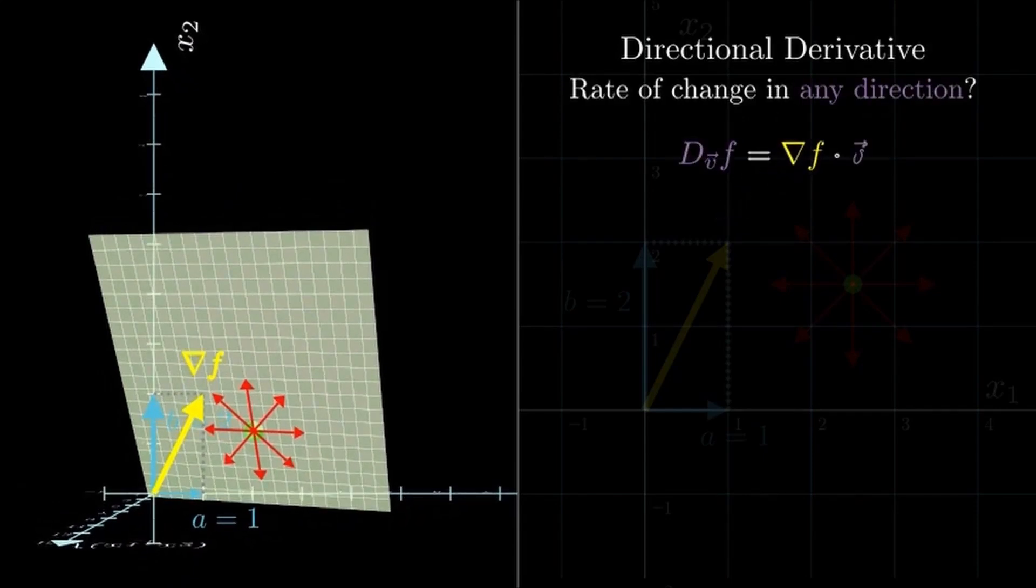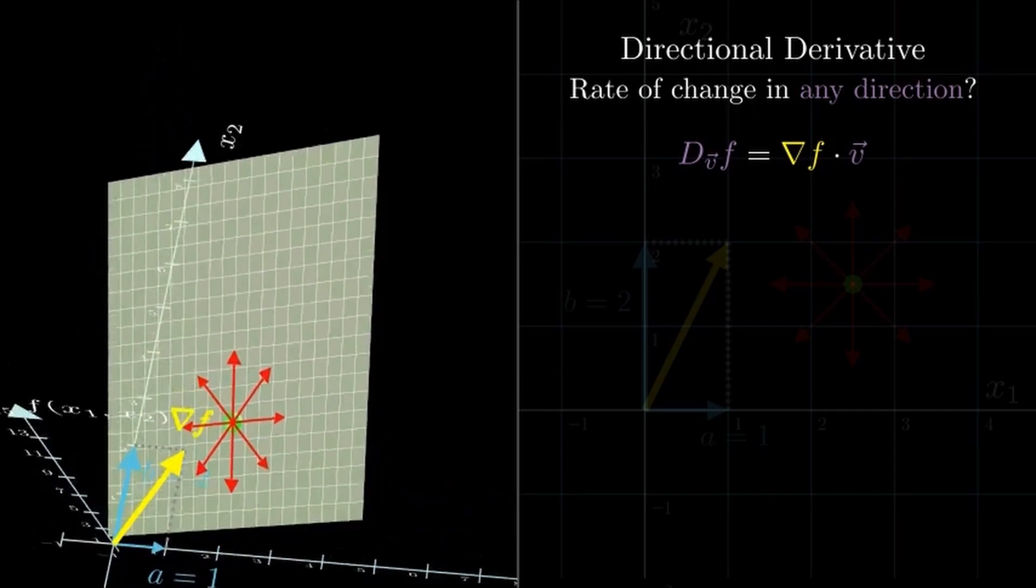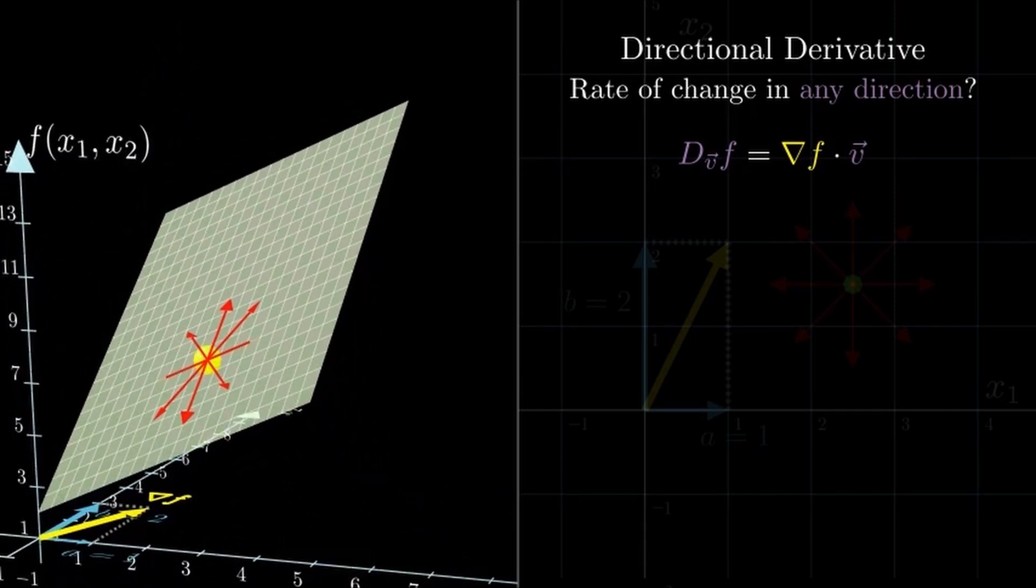The directional derivative tells us how fast the function changes at a given point when we move in some direction vector v, like this purple arrow here. And here's the neat part: it's computed by taking the dot product of the gradient vector with that direction vector v. Remember, v has to be a unit vector so its length is one.